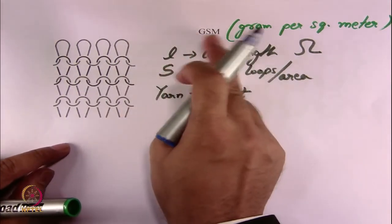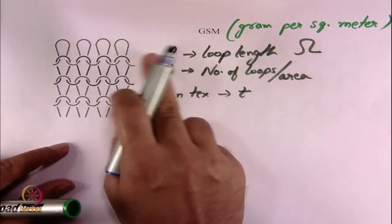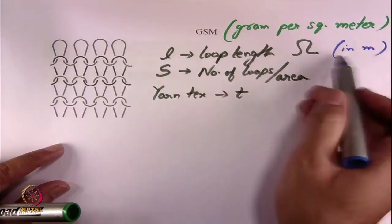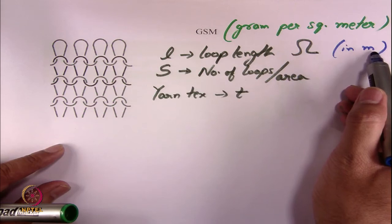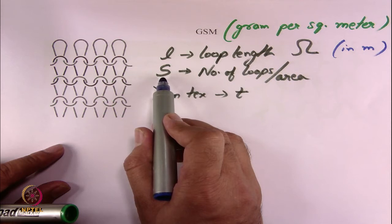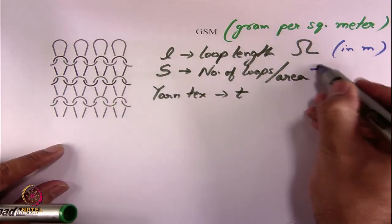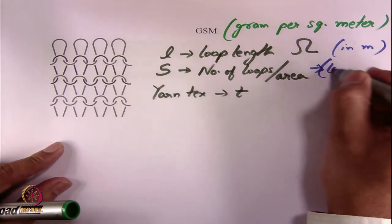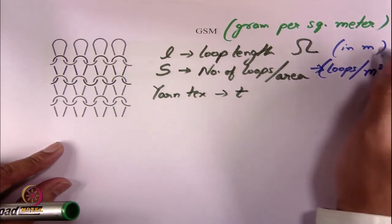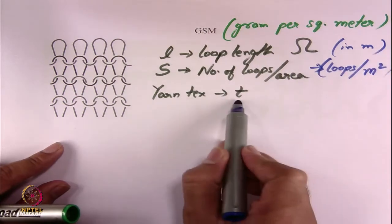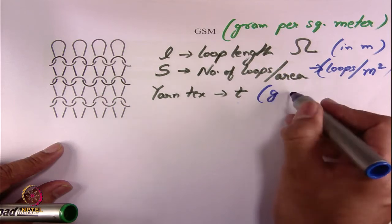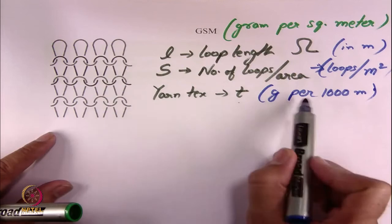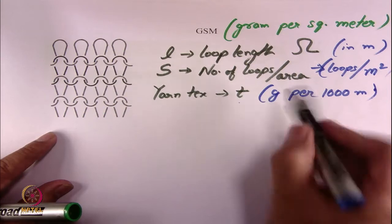Since we are expressing GSM in gram per square meter, we need to also define the unit of measurement. Let's suppose we are defining the loop length in meters — in practice we measure loop length in mm and then convert to meters. We measure stitch density as the multiplication of courses per inch and wales per inch, so the unit of S is loops per meter square — I am keeping the unit of distance as meters. And yarn tex T is defined as gram per 1000 meters of yarn.